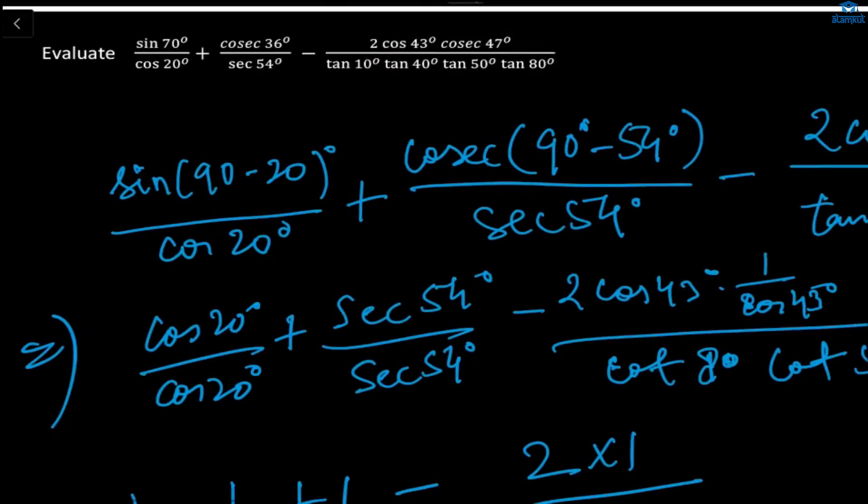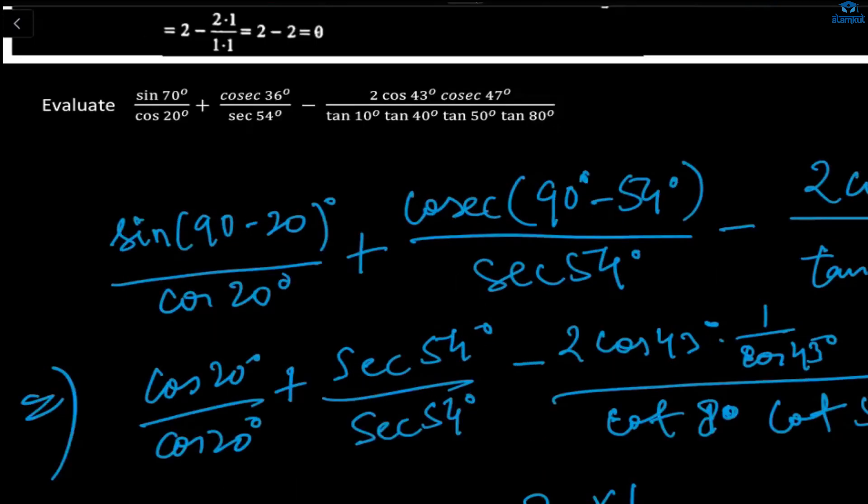A student who rejoined the class asks for the explanation again. The teacher confirms the question: sine 70°/cos 20° plus cosec 36° · sec 54° minus 2 cos 43° · (tan 10° · tan 40° · tan 50° · tan 80°). The student says they understood the last part but need the starting point re-explained.